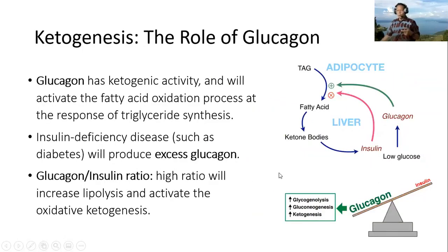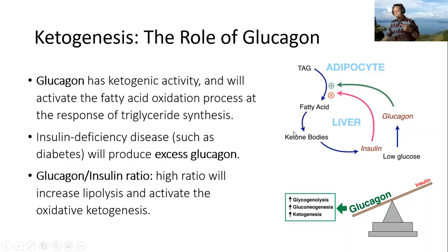Now let's see the role of glucagon. Glucagon has ketogenic activity and will activate the fatty acid oxidation process at the expense of triglyceride synthesis. Insulin deficiency diseases such as diabetes will produce excess glucagon. A high glucagon-to-insulin ratio will increase lipolysis and activate oxidative ketogenesis. Glucagon acts on fatty acids, which then convert into ketone bodies.